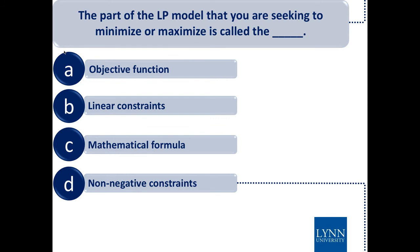The linear constraints are the things that get in your way. The part of the linear programming model that you're seeking to minimize or maximize is called the objective function — that thing you're trying to maximize or minimize, whether maximizing profits or minimizing costs.